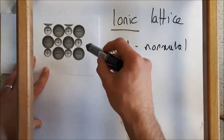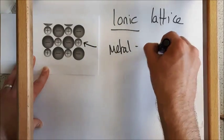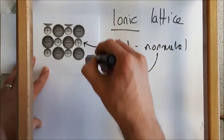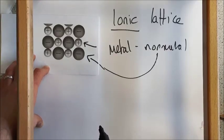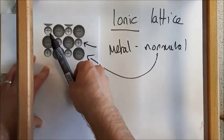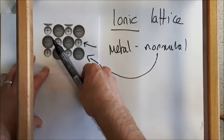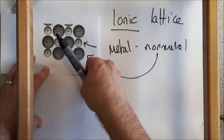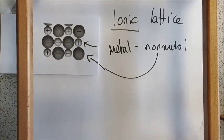All of the positives are always the metal and the negatives are always the non-metal. We get this alternating lattice structure where we have a positive surrounded by negatives, then a negative surrounded by positives, and it alternates and makes a massive structure.